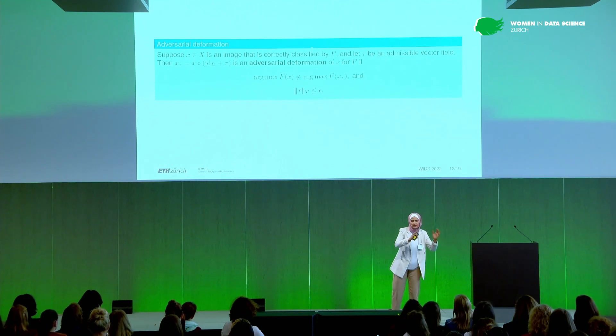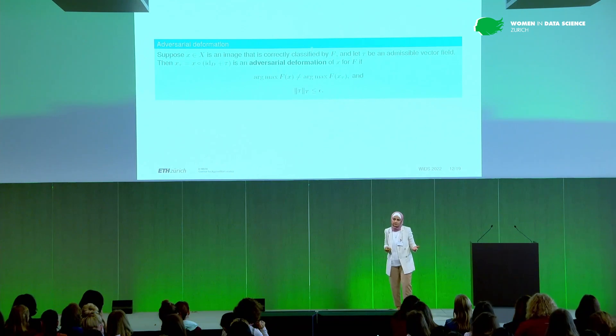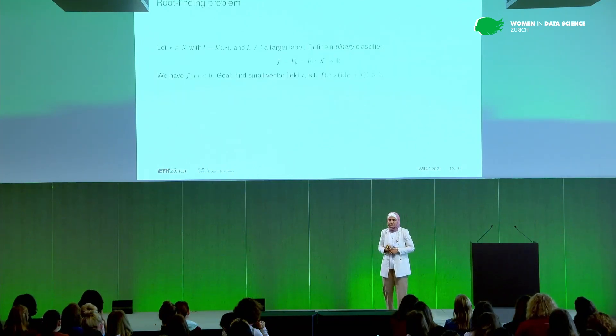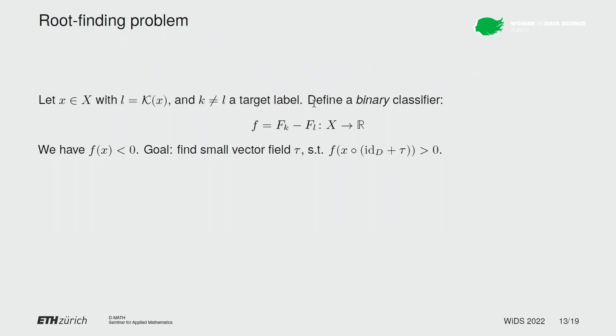So this is what we did. We wanted to say: let's not only think about small additive perturbations, let's also think about possible other things. Here is an example — an adversarial deformation. We will say that we have an adversarial deformation if you give me a budget epsilon and I'm not allowed to go over this budget for the norm of my vector field. I will try to find a deformed image so that the algorithm is fooled and it misclassifies. To do that, what we did was to solve a root-finding problem. We say: suppose the correct label — it only makes sense to do this for a correctly classified image. So to begin with, we have a correctly classified image that we call X here, the correct label is L. And I have a target label — I want to fool the classifier to think that it's label K instead of label L.